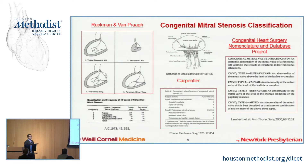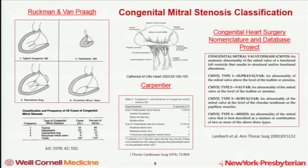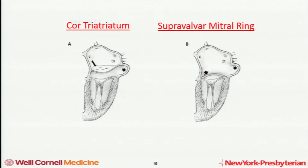There are a lot of different classification systems for approaching congenital mitral stenosis, from Rookman and Van Praag — who described typical congenital mitral stenosis, hypoplastic valve, supra-mitral ring, and parachute — to the Carpentier system dividing it into Type 1 with predominantly valvular lesions and Type 2 with predominantly subvalvular lesions, versus a newer classification by Lombardi dividing it into supravalvular, valvular, and subvalvular. The point is you can have obstructions at any of these levels, and it's important to look for them when you're worried about congenital mitral stenosis.